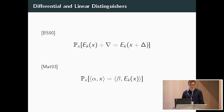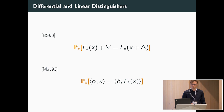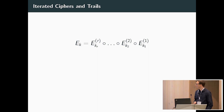For the motivation: since the 90s we have known about linear and differential distinguishers, and generally when you suggest a new design, one of the things you have to argue about is providing some sort of argument for your resilience to linear and differential cryptanalysis. What is of interest is determining the optimal parameters of these distinguishers as well as the expected power over the key space. This presentation will primarily focus on linear cryptanalysis, as the differential case is largely analogous.